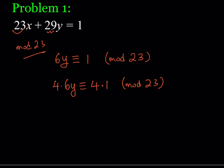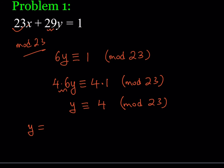4 times 6 in mod 23 is 1, so I get y ≡ 4 (mod 23). This means when y is divided by 23, the remainder is always 4. I can write y as 4 + 23k, where k is any integer.